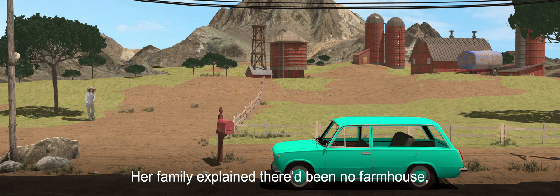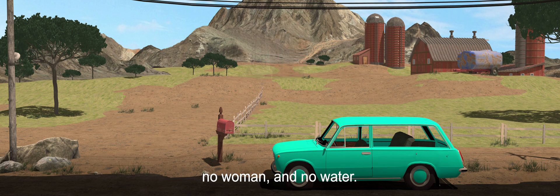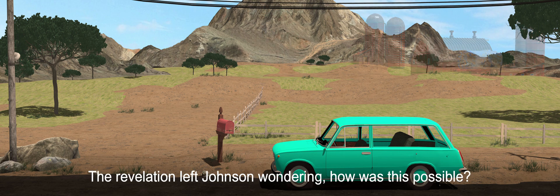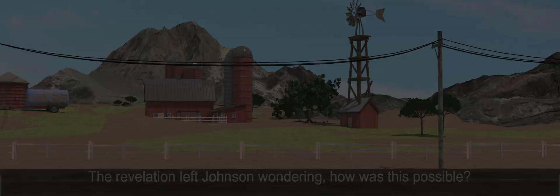Her family explained there'd been no farmhouse, no woman, and no water. The revelation left Johnson wondering, how was this possible?